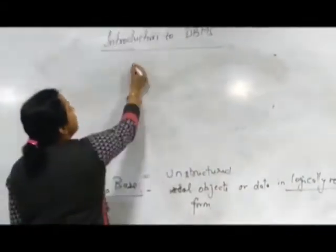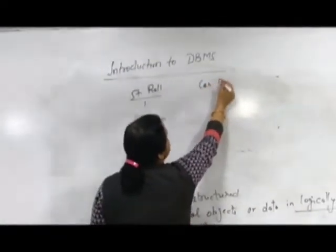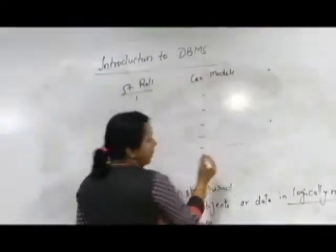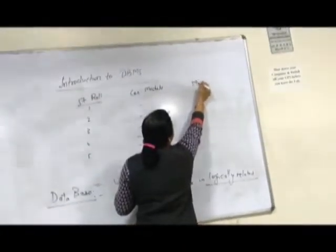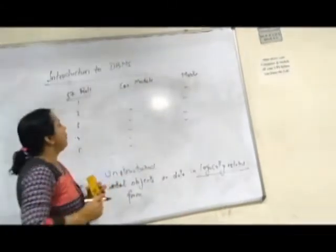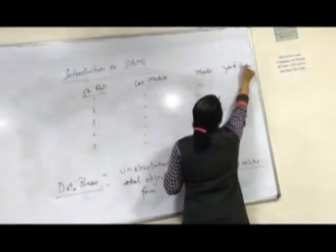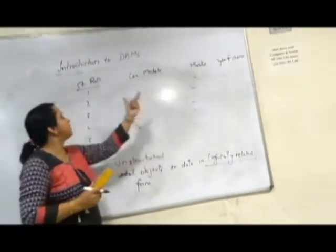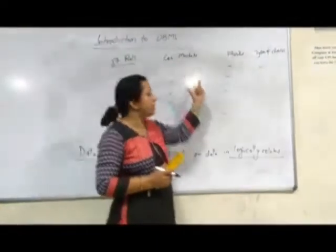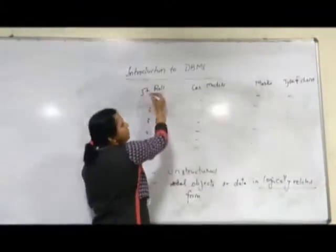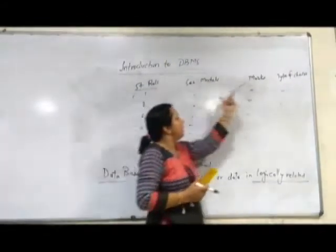Let's take an example. Suppose we have student roll numbers 1, 2, 3, 4, 5, and also car models, marks, and types of chairs. If we have the details of types of chairs, marks, car models, and student roll numbers, can we see that all these are related? Student roll number and marks are related, but student roll number is not related to car models, and not related to types of chairs. So this data is not logically related.